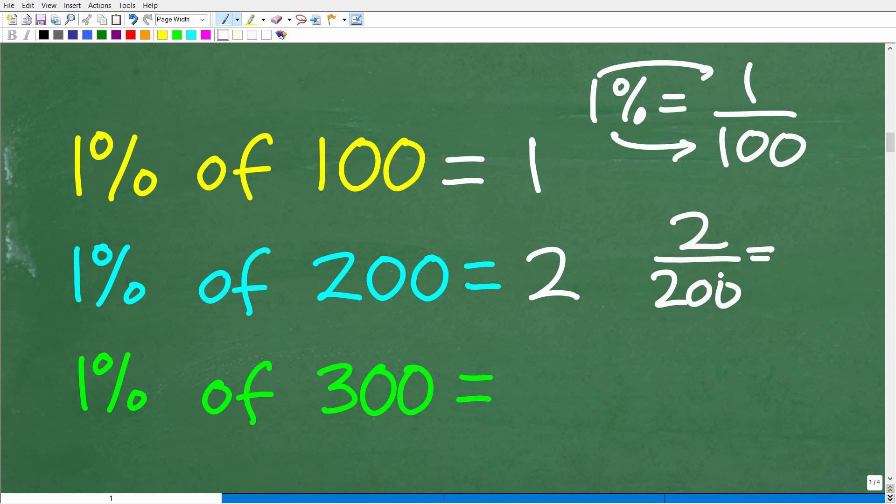Well, we can reduce this fraction right here. And now we have what? 1 over 100. So 1 is being compared to 100. So this is 1%. All right, so what is 1% of 300? Well, we're just going to follow the pattern. It is 3, right?